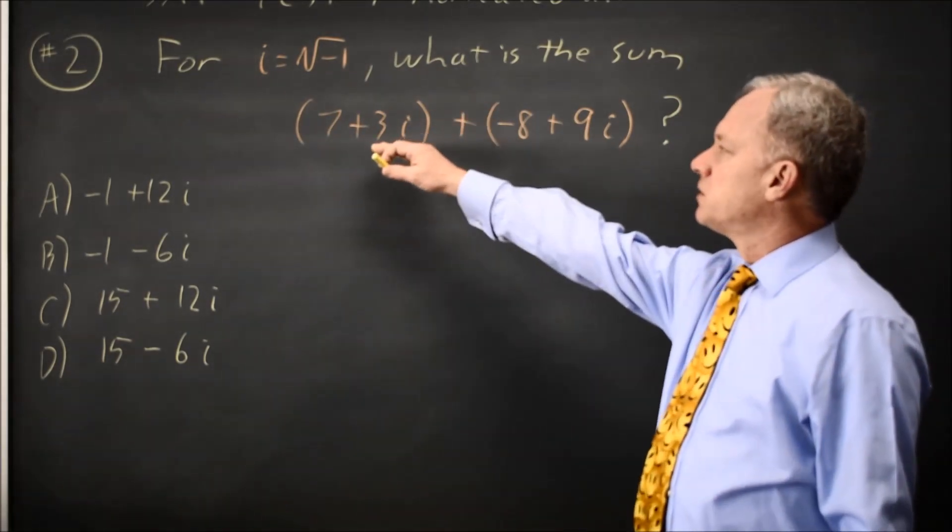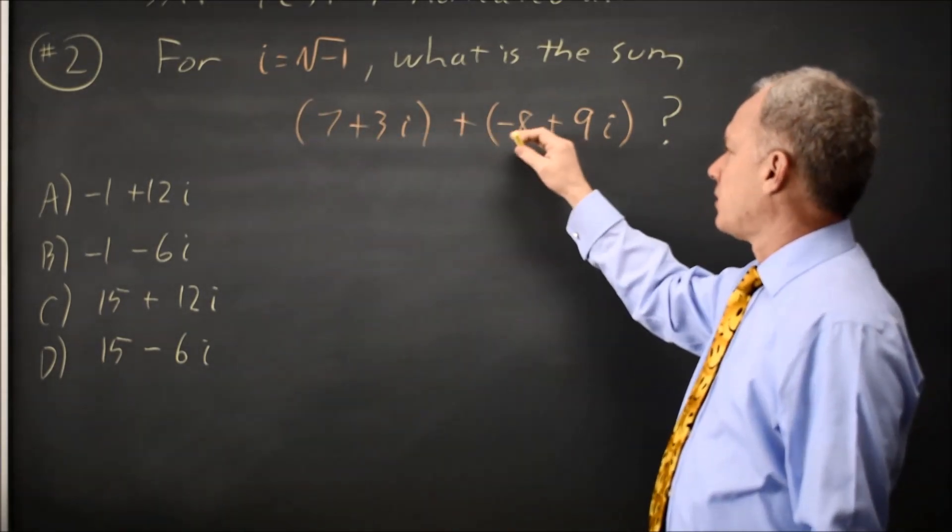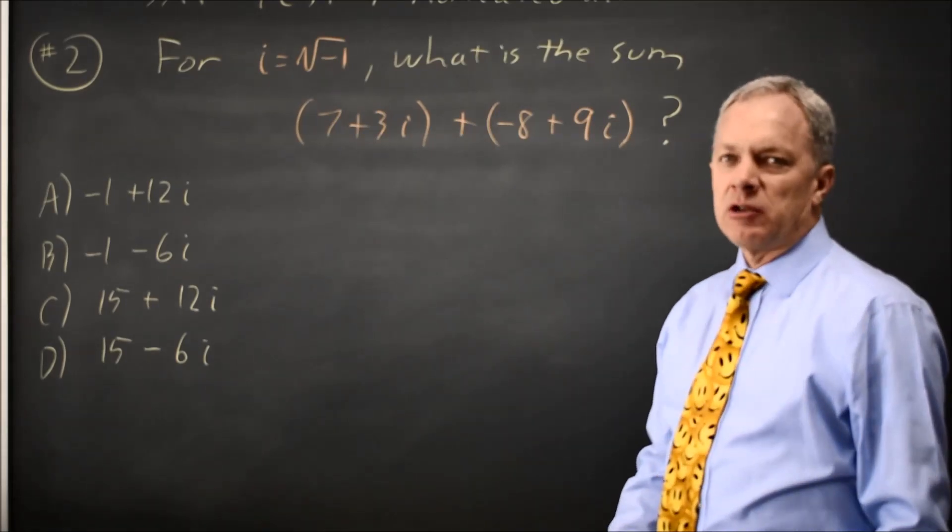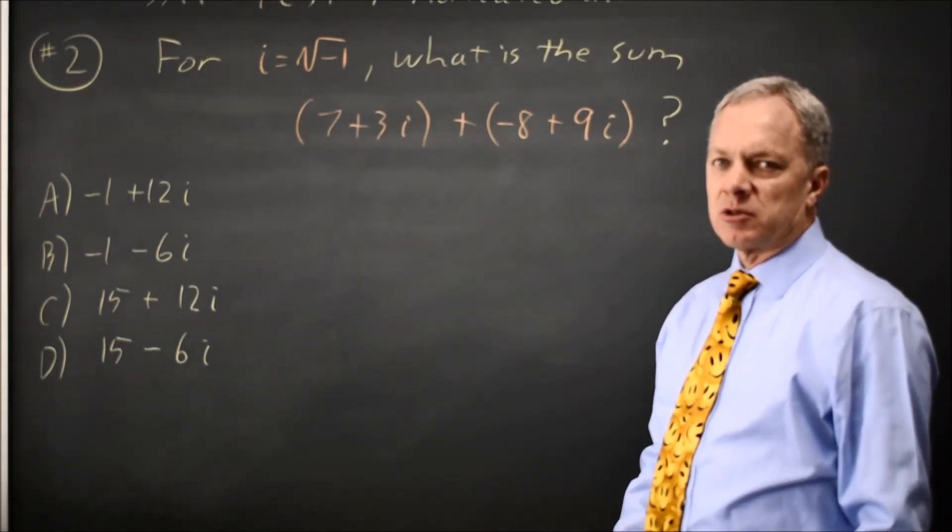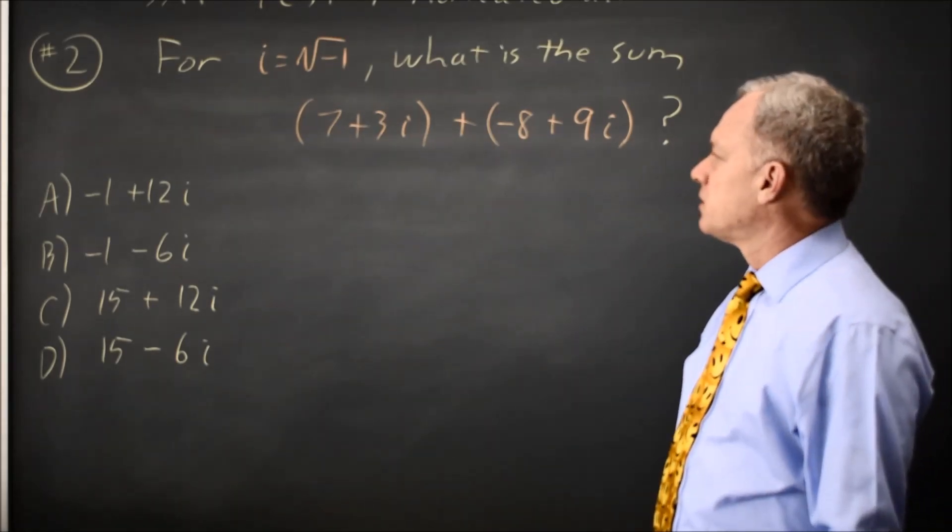To add these numbers we add them just like we would 7 plus 3x and negative 8 plus 9x. If we were multiplying or dividing then you have to get into what i times i is because i squared is different.